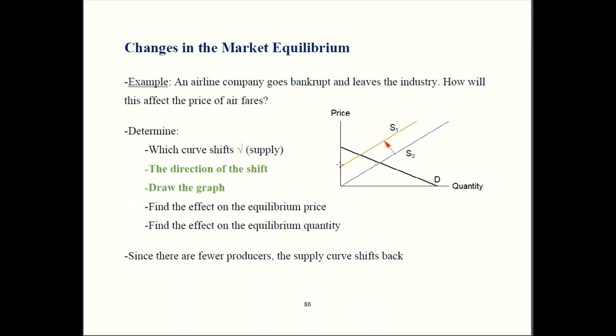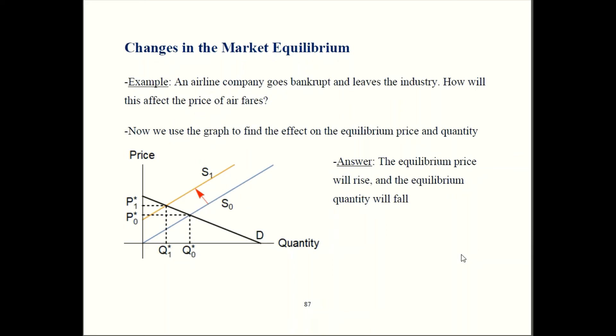We also see a decrease in quantity. Quantity starts out over here; once a firm leaves the industry, there's less supply, so quantity is going to go down. We expect that when a firm goes bankrupt and leaves the industry, we'll see higher prices for the firms that survive and a lower overall quantity. We'll have to watch and see if some airline companies end up collapsing in this recession.